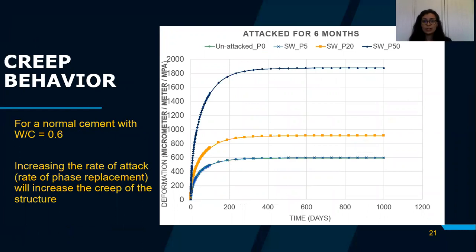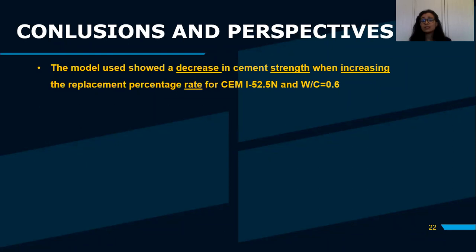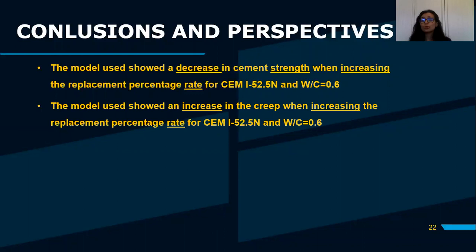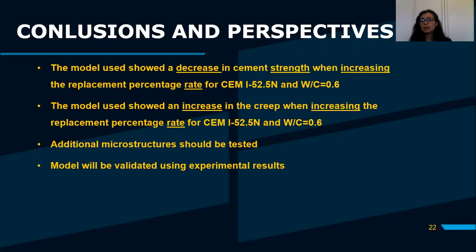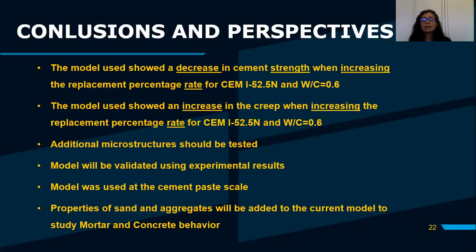For conclusions and perspectives: the model showed a decrease in concrete strength when the replacement rate increases, and an increase in creep when the attack rate increases. Additional microstructures should be tested. The model will be validated using experimental results, which is why we used ordinary Portland cement with a water-to-cement ratio of 0.6, not complying with European norms, to accelerate experimental degradation. The model was applied at the cement phase scale, and we are working on adding sand and aggregate properties to extend it to mortar and concrete behavior. Thank you.